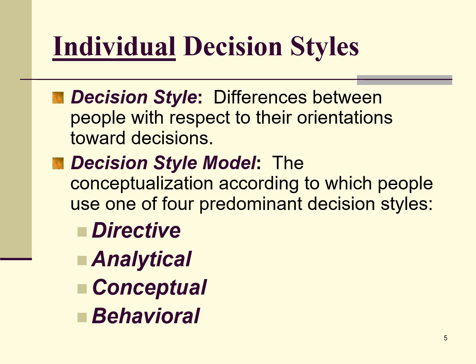We also need to think about individual decision styles — these are different between people with respect to their orientation towards decisions. The decision style model is another way to conceptualize who decision-makers are as a personality trait based solely on their style of decision-making. It conceptualizes people according to which of four predominant decision styles they use. If I want to know how someone is likely to act in a decision-making capacity, this is a good model to use.